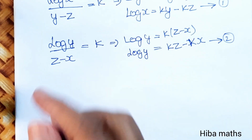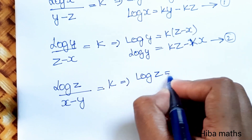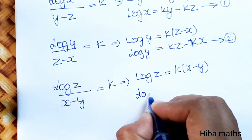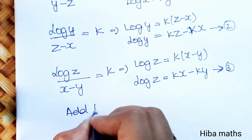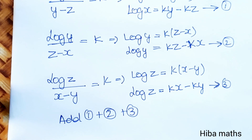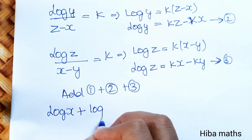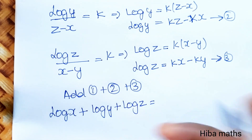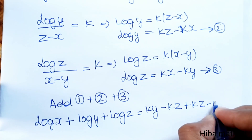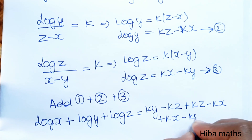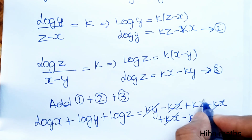The third equation: log z = k(x-y) = kx - ky. Now adding all three equations: log x + log y + log z = (ky - kz) + (kz - kx) + (kx - ky). All terms cancel: ky - ky, kx - kx, and kz - kz all cancel out.